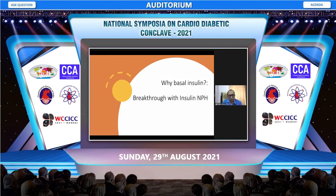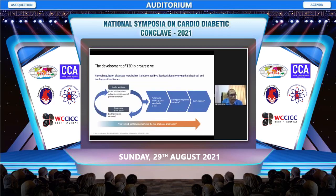If we look at why NPH is not enough and why we need basal insulin: type 2 diabetes is a progressive disease with a constant decline in beta cell function over the years. Even at the time of diagnosis, there is a significant 50% reduction in insulin secretion, and there have been studies showing the benefits of early insulin initiation.